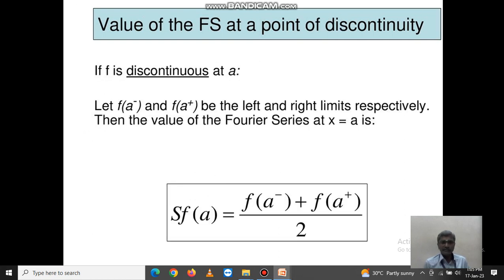Value of the Fourier series at a point of discontinuity. If f is discontinuous at a, let f(a⁻) and f(a⁺) be the left and right limits respectively. Then the value of the Fourier series at x = a is Sf(a) = [f(a⁻) + f(a⁺)]/2.